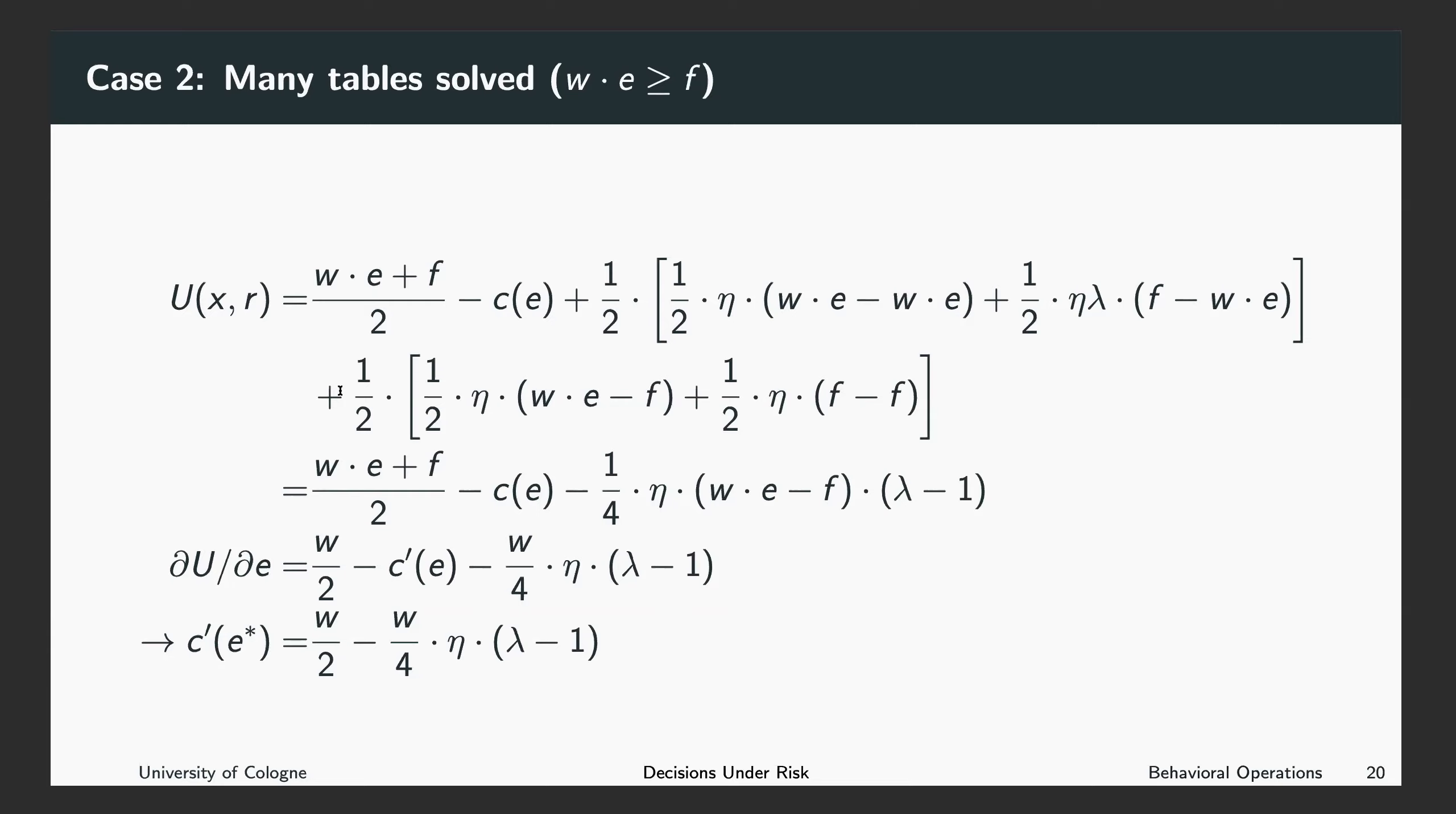Here, the second line, we look at the case where the fixed payment is your reference point, which is the case with 50% probability. So you expect the payment to be a fixed payment with 50% probability. If you expected the payment to be the fixed payment, with 50% probability you will receive the piece rate. If you receive the piece rate, in this case, you are better off than expected because the piece rate is larger than the fixed payment, and you will benefit from it by psychological payoff, which is weighed by eta. If you, on the other hand, expected the fixed payment and received the fixed payment, the realization is just equal to the reference point, and this is zero.